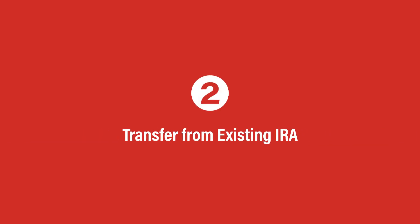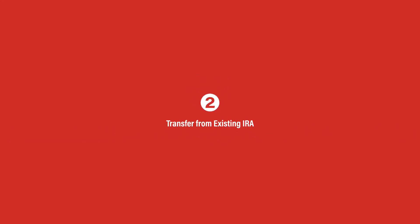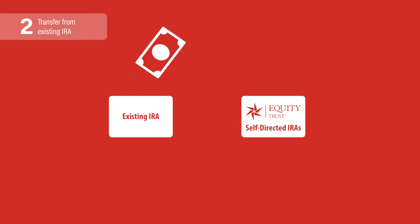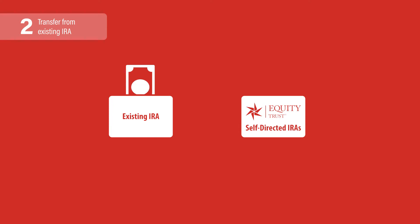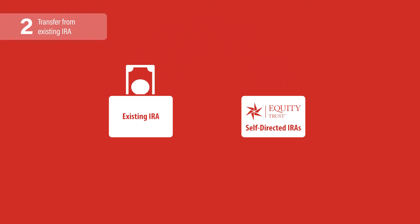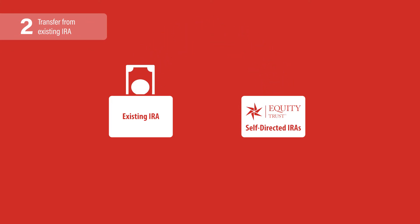The second option of funding an IRA is with a transfer. An IRA transfer is when you move funds or assets from an existing IRA to a new IRA. The funds or assets are transferred directly from your current financial institution to Equity Trust by completing our account transfer form. It's possible to complete a full or partial transfer.